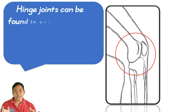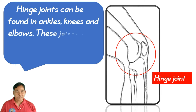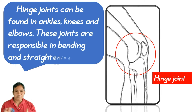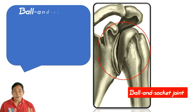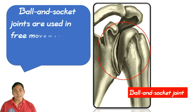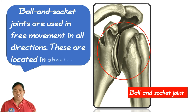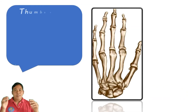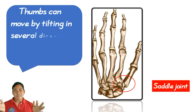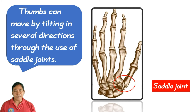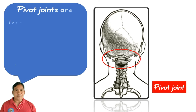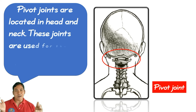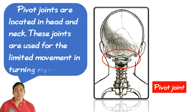Hinge joints can be found in the ankles, knees, and elbows. These joints are responsible for bending and straightening. Ball and socket joints are located in the shoulders and allow free movement in all directions. Thumbs can be moved by tilting in several directions through the use of saddle joints. Pivot joints are located in the head and neck, and are used for limited turning movements from right to left.